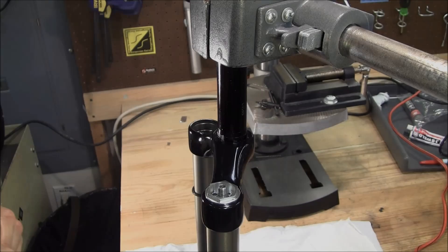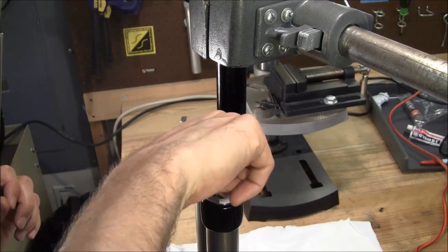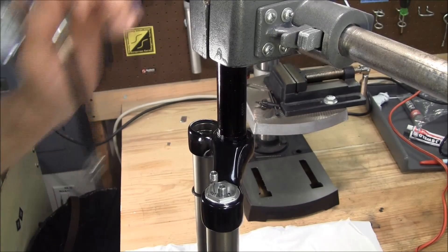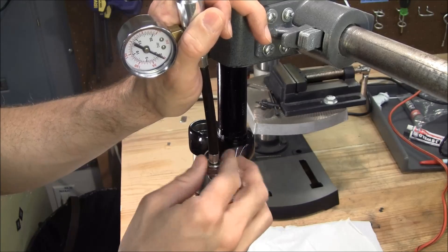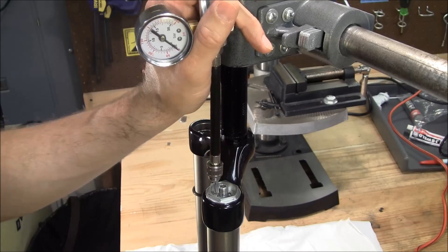To re-inflate the IFP chamber, we're going to insert the IFP tool just like we did during the deflate process. We'll connect our high pressure pump to the tool and inflate the chamber to 150 PSI as called for in the service guide.